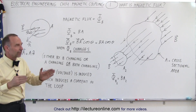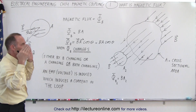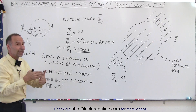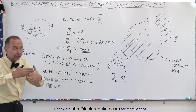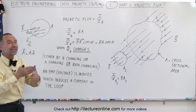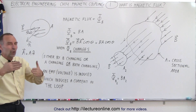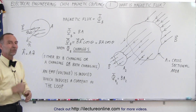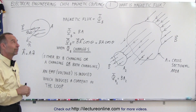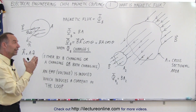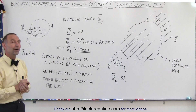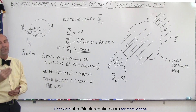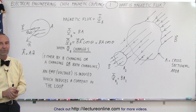So it's all about magnetic flux through the loop. If the field is perpendicular, it's B times A. If it's not perpendicular, then it's B times A times the cosine of the angle between the normal and the direction of the B field. Hopefully that gives you a better perspective of what we mean by magnetic flux.